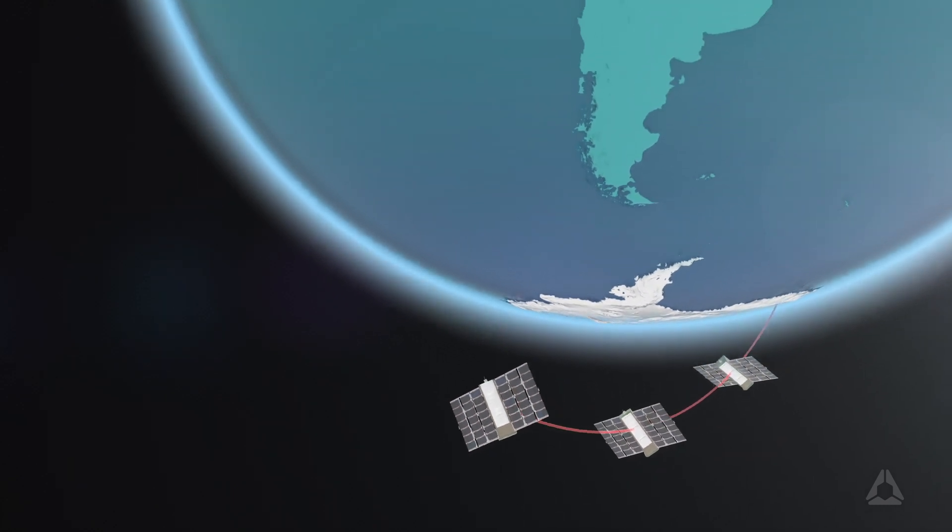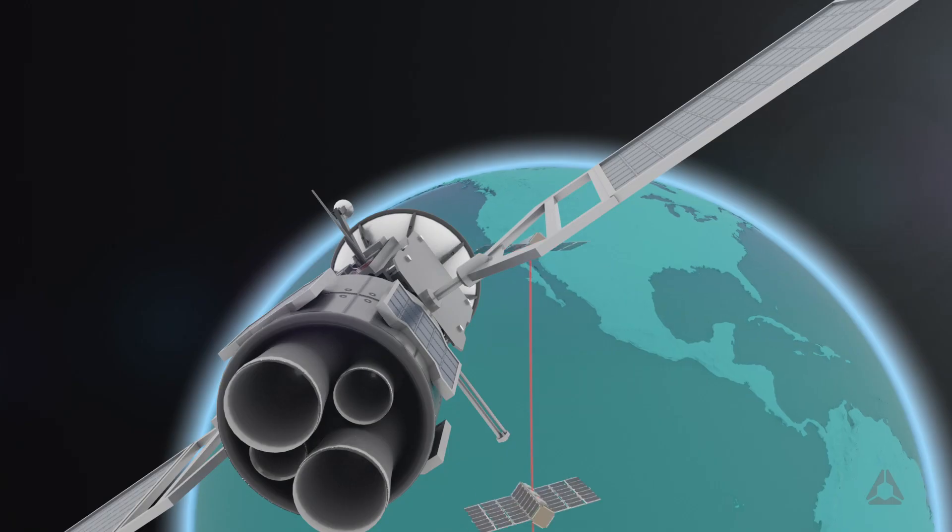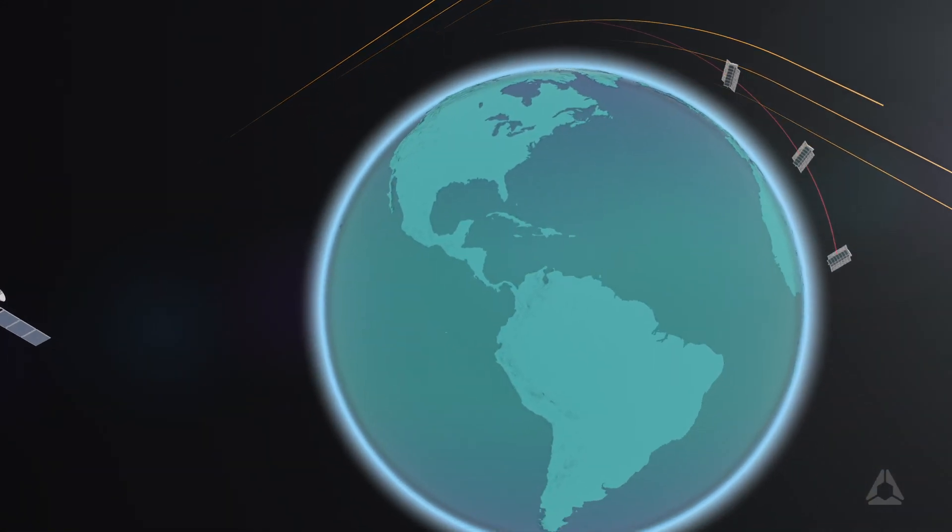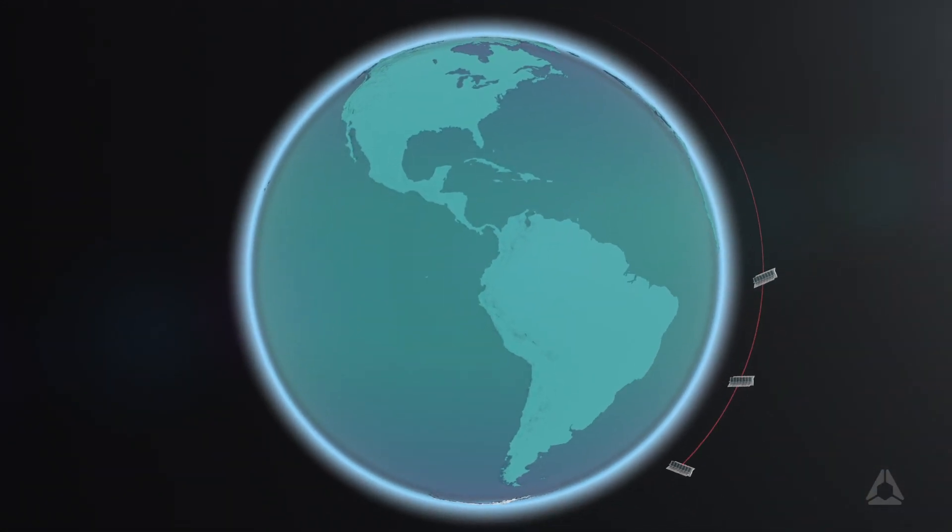Spire's constellation of low-Earth orbit satellites constantly gathers GPS radio signals as they pass through, decelerate and bend in the denser medium of the Earth's atmosphere.